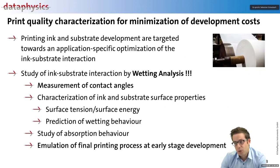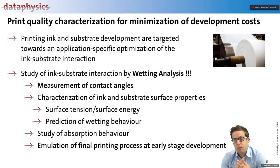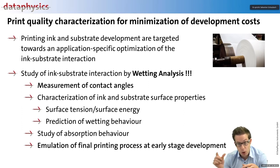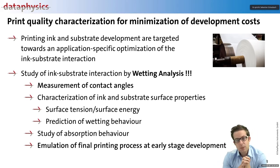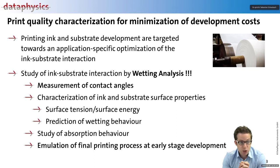When thinking about the printing process, we want to minimize development cost. Modern measurement equipment helps through wetting analysis — we can measure the contact angle of your ink drop on a substrate, whether paper, glass, metal, or basically anything. In addition, we can characterize the ink itself with a surface tension analysis.